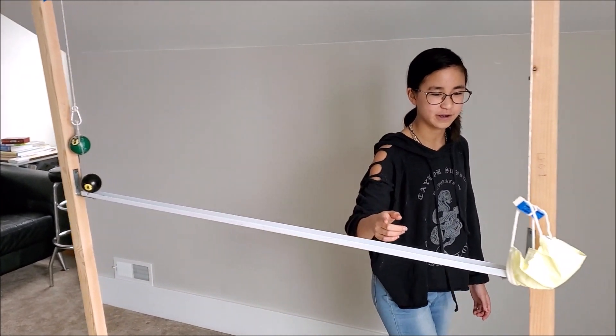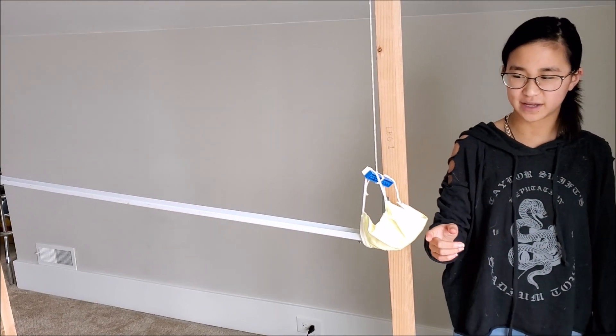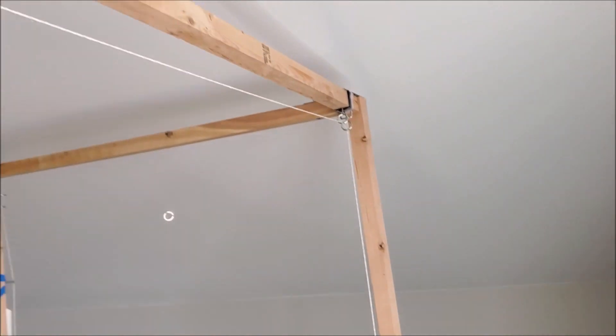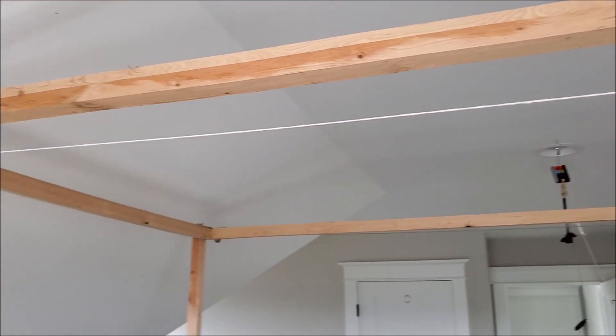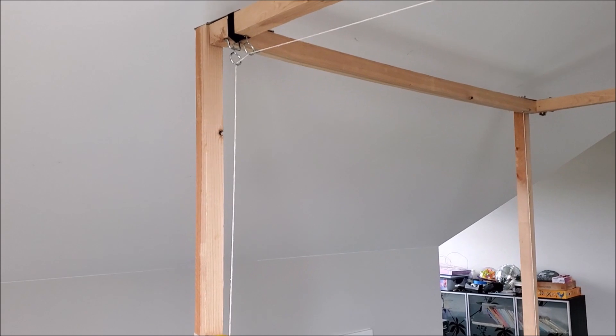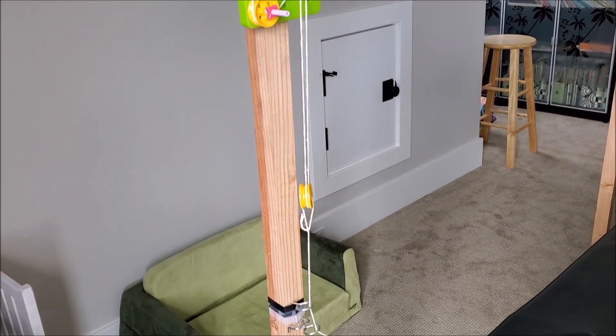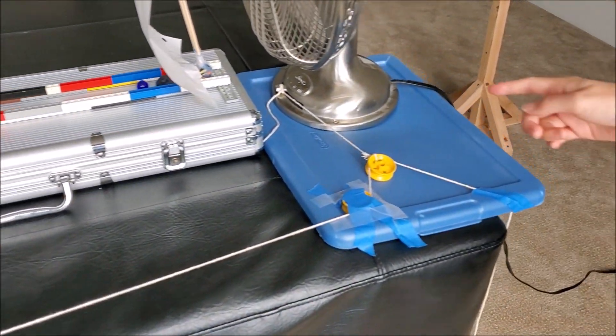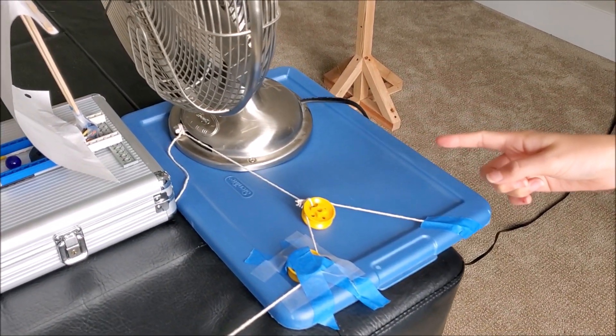The black ball will slide down the rail into the face mask, and the weight will pull on this string to a series of pulley systems. It'll pull on this vertical pulley, which will pull on this horizontal pulley, and end up pulling the switch on the fan.